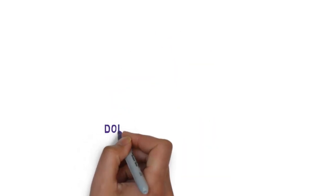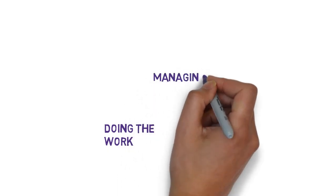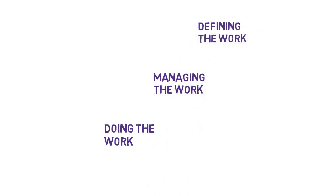So the process areas are pretty logically ordered and show several potential paths for improvement based on the organization's needs. We can see how the process areas are organized by maturity level and also how capability levels work within a process area.